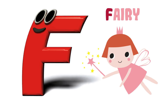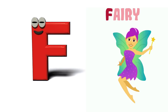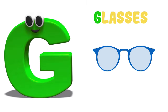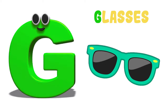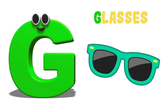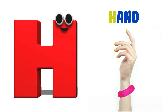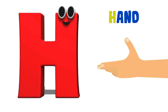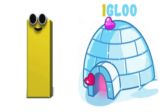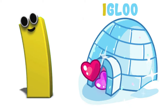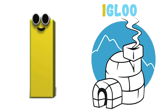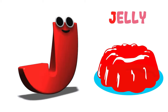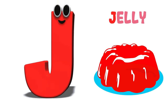F is for Fairy, F-F-Fairy, F-F-Fairy, F-Fairy. G is for Glasses, G-G-Glasses, G-G-Glasses, G-Glasses. H is for Hand, H-H-Hand, H-H-Hand, H-Hand. I is for Igloo, I-I-Igloo, I-I-Igloo, I-Igloo. J is for Jelly, J-J-Jelly, J-J-Jelly, J-Jelly.